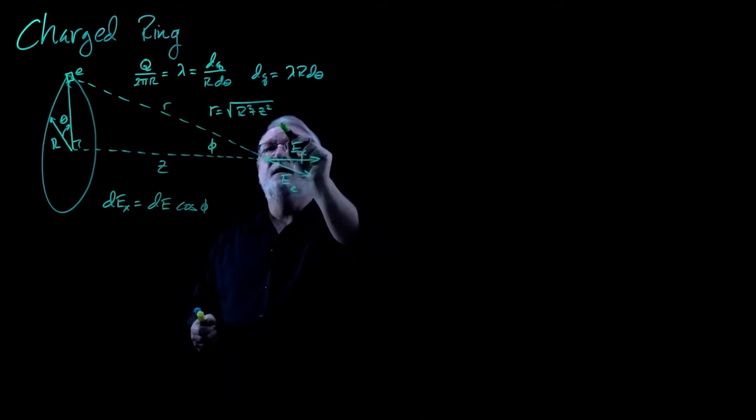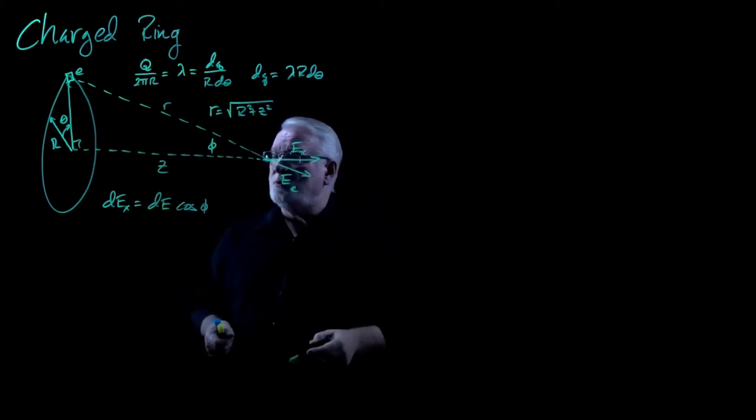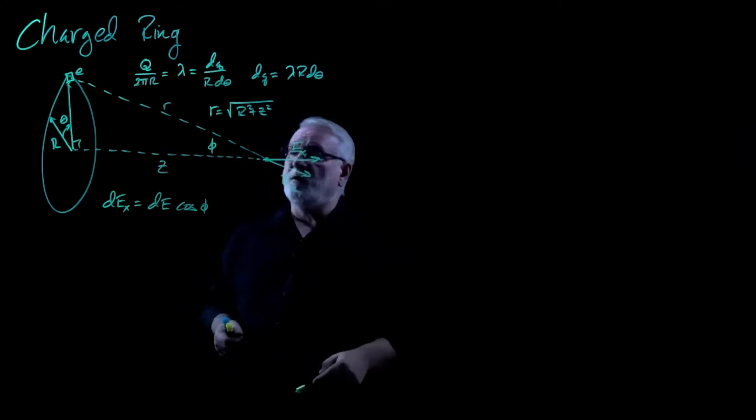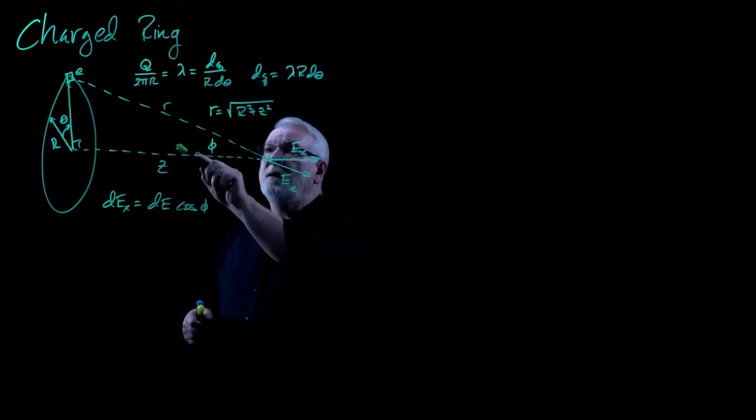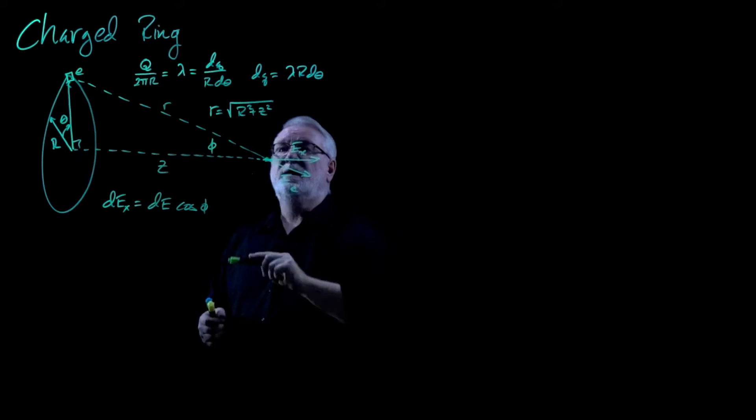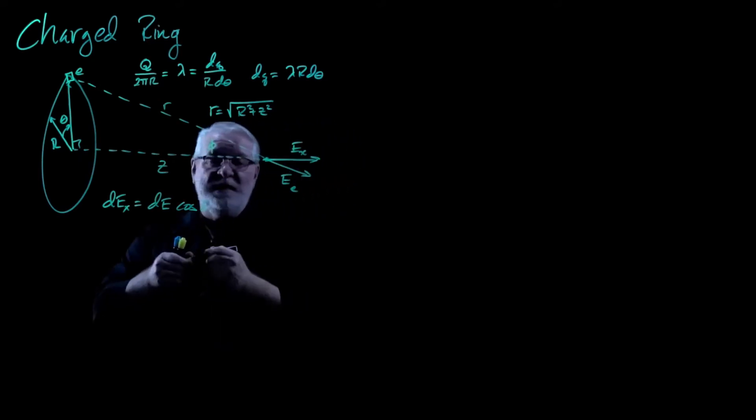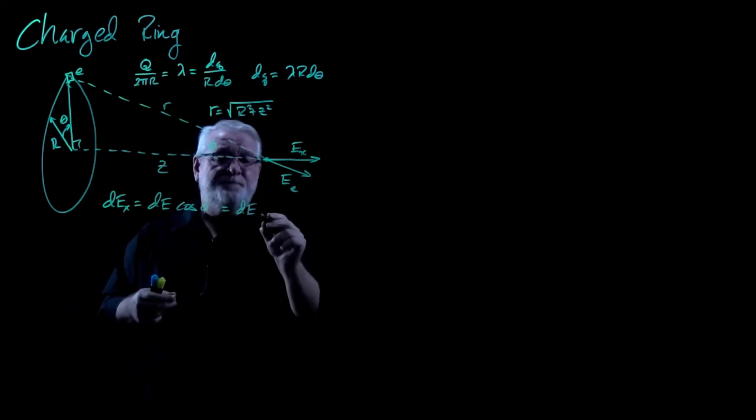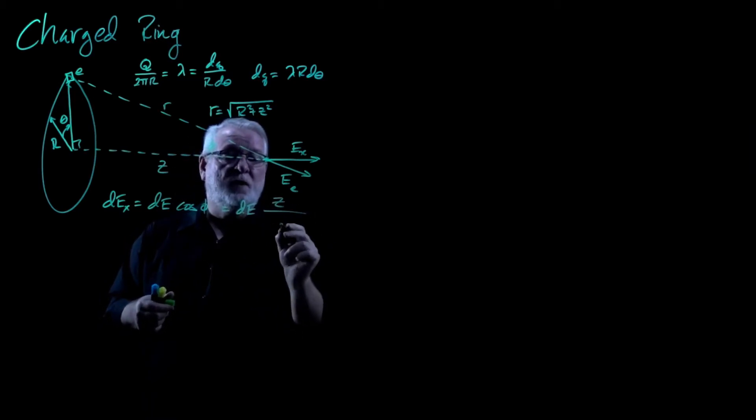This phi angle sitting right here and the cosine of an angle is always the adjacent side over the hypotenuse. That's Z over R. And of course, R is the square root of Z squared plus R squared. So dE is also equal to where dEX is going to be equal to our dE. And the cosine of the angle is going to be the adjacent over the hypotenuse. It's going to be Z over the square root of R squared plus Z squared.